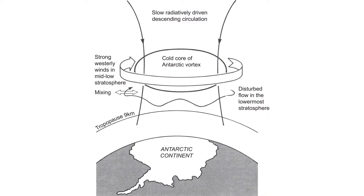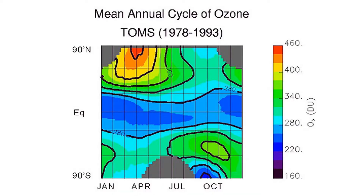These compounds are confined to the polar vortex, which forms over the Antarctic during the wintertime and springtime, and is a very strong westerly circulation that effectively traps air in the polar region. The ozone hole does not occur during the winter because there is no sunlight. The compounds build up during the winter, and then when sunlight returns in the spring, it drives photochemical reactions that very rapidly destroy ozone. Ozone levels become very low and the ozone hole is formed, typically occurring in September and October.